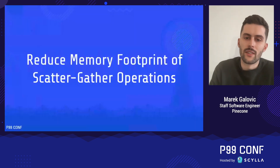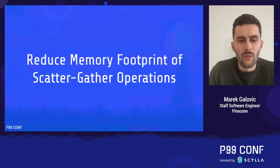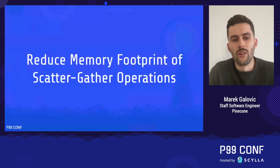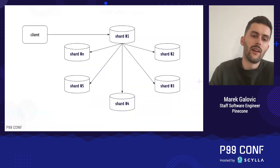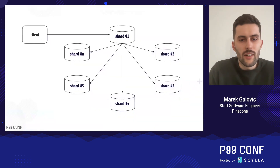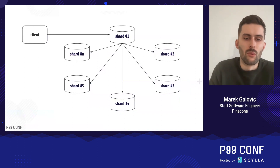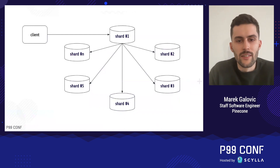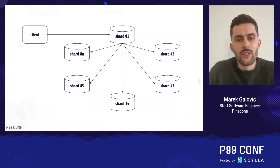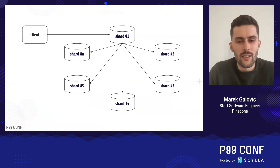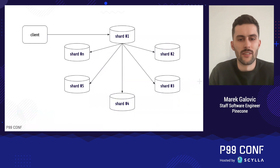To start things off, as a first example, we'll look at how to reduce the memory consumption of scatter-gather operations in a cluster. Consider a cluster of n shards where we have some client that makes a request to shard 1. That shard scatters this request to all of the other shards in the cluster, aggregates the partial responses, and then returns the aggregated results to the client.